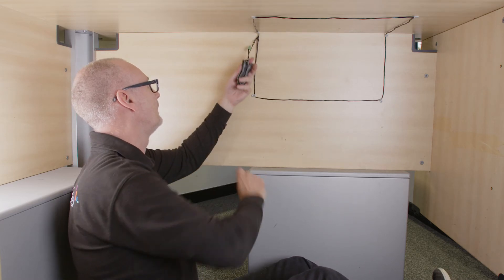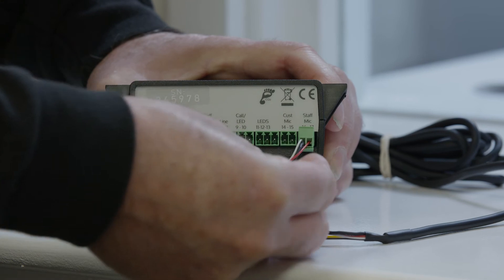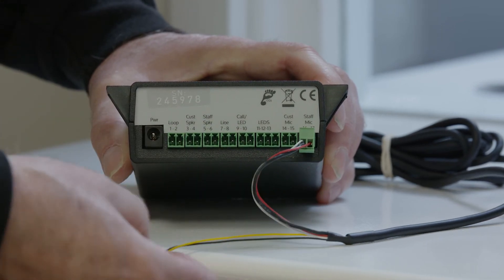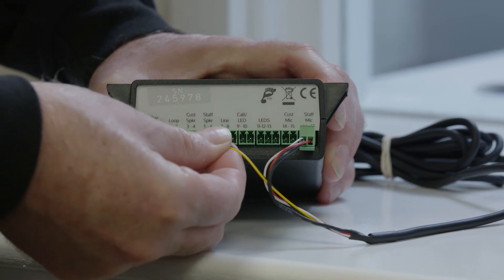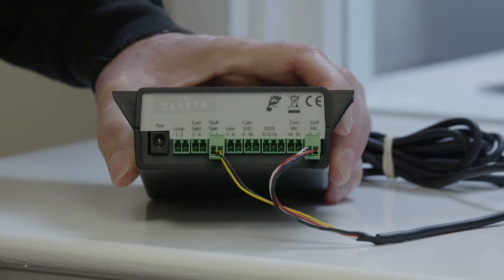Insert the staff microphone connection into sockets 16 and 17, also labeled the staff mic connection. Insert the staff loudspeaker connection into sockets 5 and 6, also labeled the staff speaker connection.